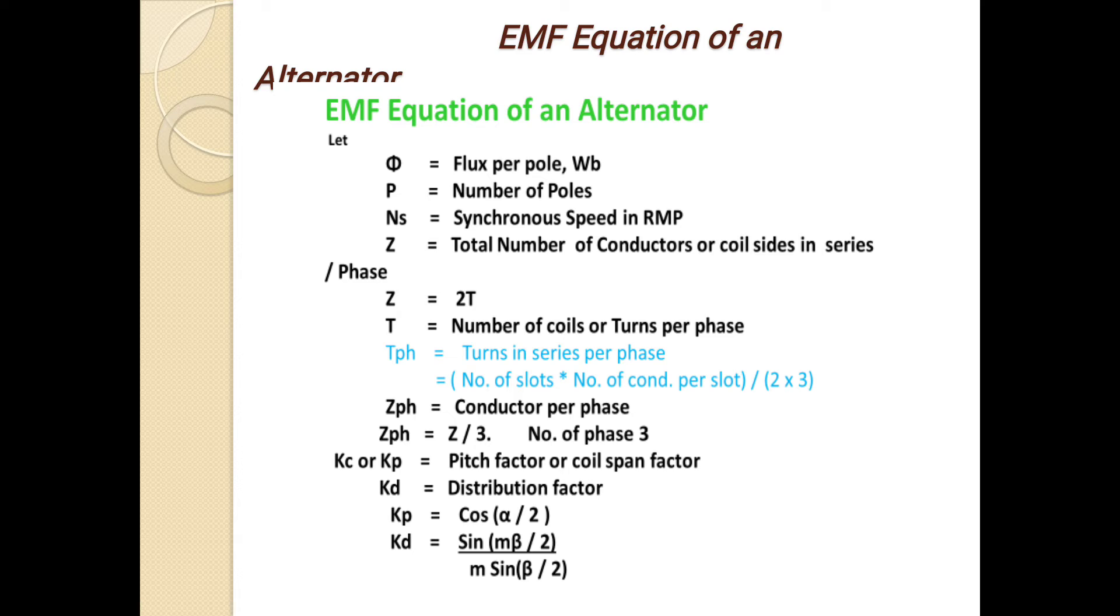Kc or Kp, where Kc means pitch factor or coil span factor. And Kd is distribution factor. Kp formula is cos(α/2). And Kd equals sin(Mβ/2) divided by M sin(β/2).